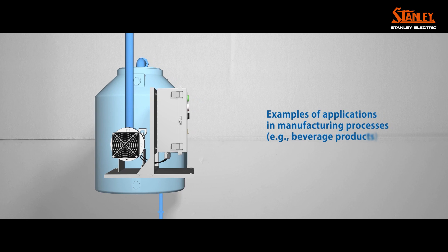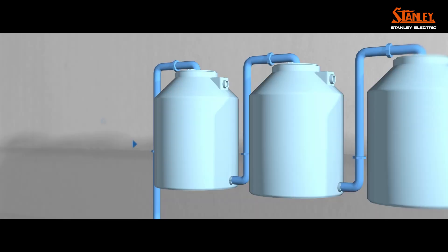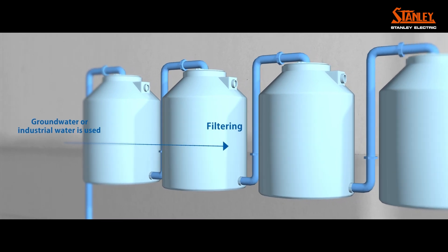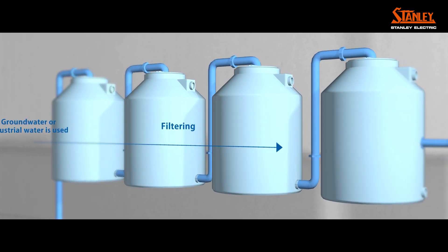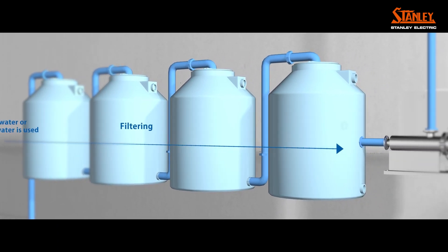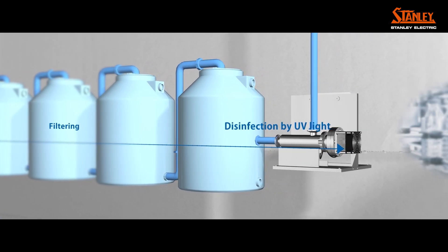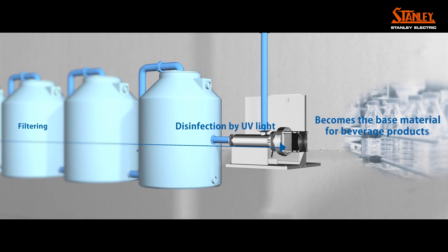In the manufacturing process of beverage products, groundwater or industrial water is used. This water is then filtered to remove impurities, irradiated with UV light in a mid-flow disinfection device, and the disinfected water is used as the base material for beverage products.